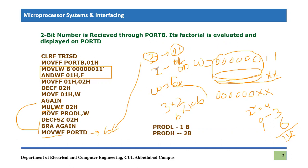I hope you have understood this program. You can try another number other than three since we are using two-bit numbers, so you can use two, one, or zero. At zero this program won't work correctly because zero factorial should be one, so modifying it to handle zero factorial is your task. Furthermore, I will ask you to extend or scale up this program to calculate the factorial of at least a four-bit number — in that scenario you will need to use both Product L and Product H, and in this way you will understand the full concept of multiplication in the PIC microcontroller.